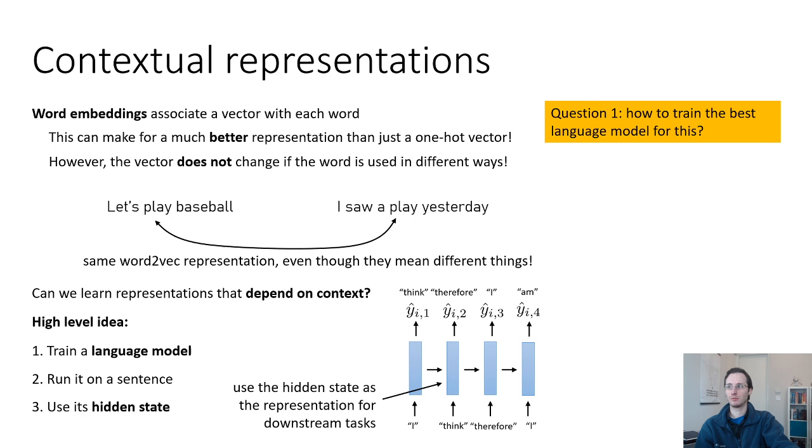And in particular, it'll be a representation that's sufficient to predict the next word. So it also has this proximity property to it. So it basically carries information necessary to predict future words, just like the word2vec embedding. But now this representation is dependent on the other words in the sentence, at least on the preceding words. So there are two questions we have to resolve to actually make this happen. Question one, how to train the best language model for this? And question two, how to then use this language model for downstream tasks?